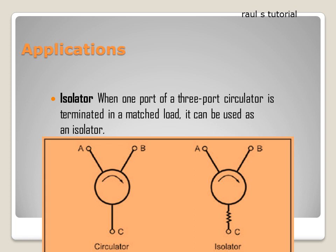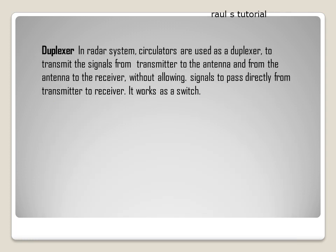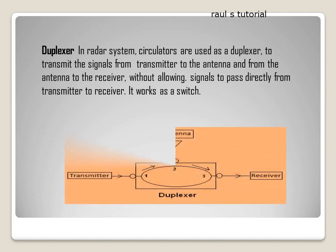Applications: When one port of a three port circulator is terminated in a matched load, it can be used as an isolator. Circulators are also used as a duplexer in radar systems to transmit signals from a transmitter to the antenna and from the antenna to the receiver, without allowing signals to pass directly from transmitter to receiver. It works as a switch.